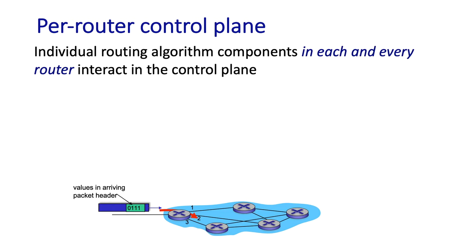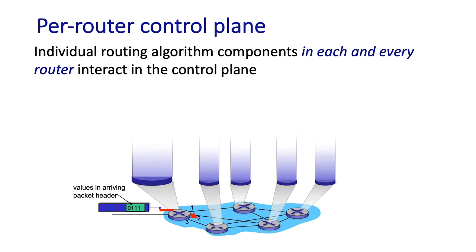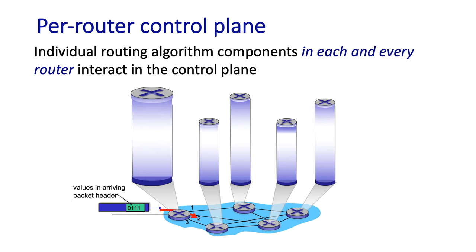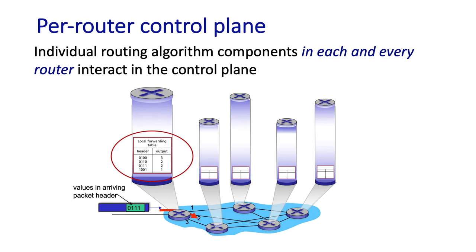Here's how the traditional per-router control plane approach works. Inside every router is a local forwarding table. A router operates by matching bits in a datagram header with a table entry in the forwarding table that specifies the appropriate output link to which this datagram should be forwarded.